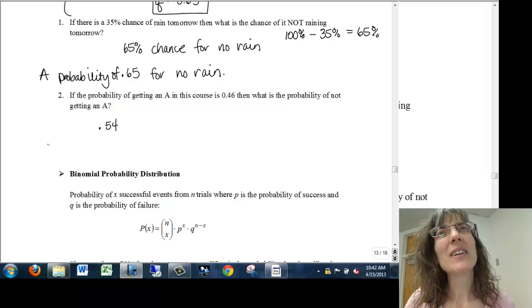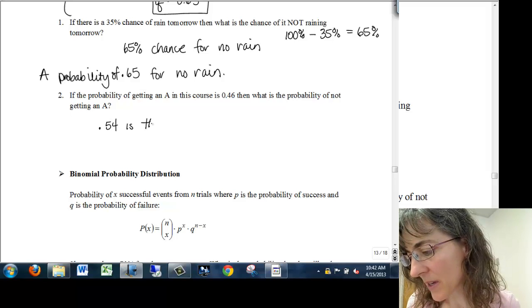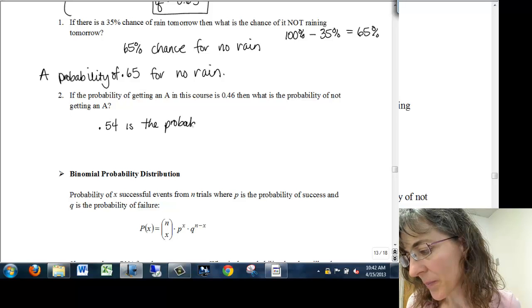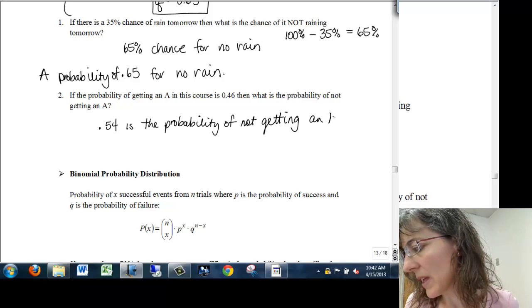Point five four is the probability. Point five four is the probability of not getting an A.